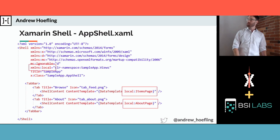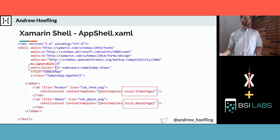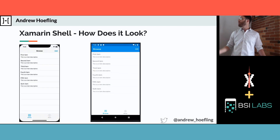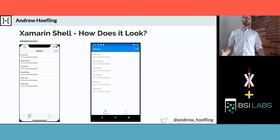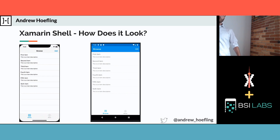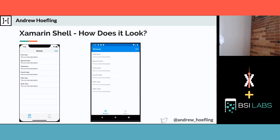To wire up pages for shell, you pull in your views via an XML namespace and say for the content template: use the About page when they click the about tab, use the Items page when they click the browse tab. And that's all the code you need to build this tab bar — running on both iOS and Android. Shell also gives you hooks to customize colors: if you want the tint color to be purple instead of blue, you can easily change that, and change background colors too.